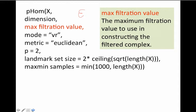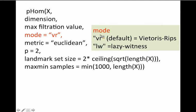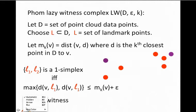The filtration value is how big you want your epsilon balls to be — often thought of as time, controlling how much you grow your epsilon balls. For mode, there are two choices: Vietoris-Rips, which is the default, uses all data points. But with lots of data points — even 100 or 200 — the program can start taking longer and longer. So often you want to use the lazy witness complex, which is built into FOM.